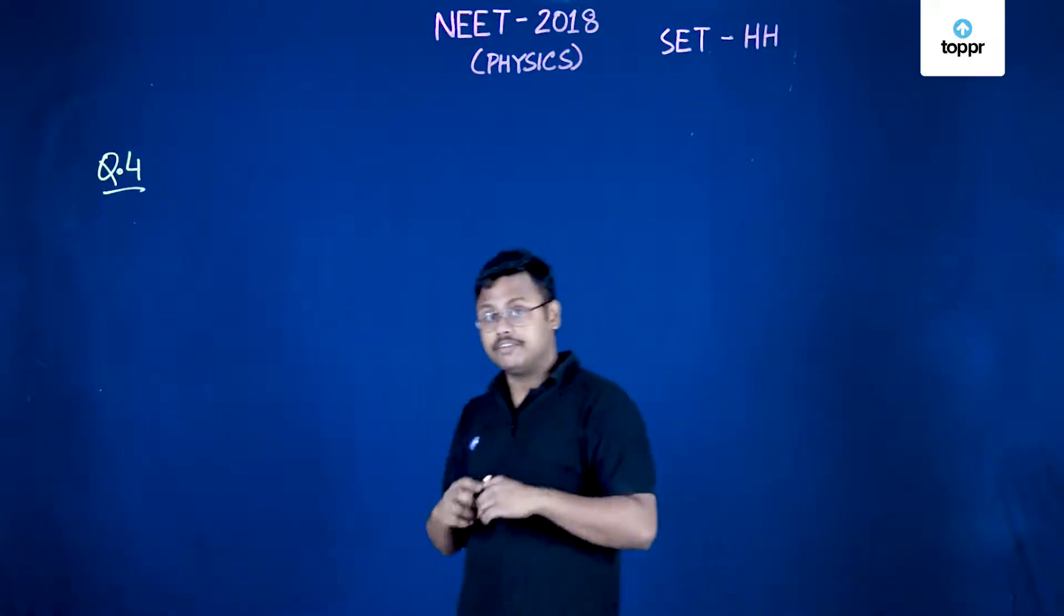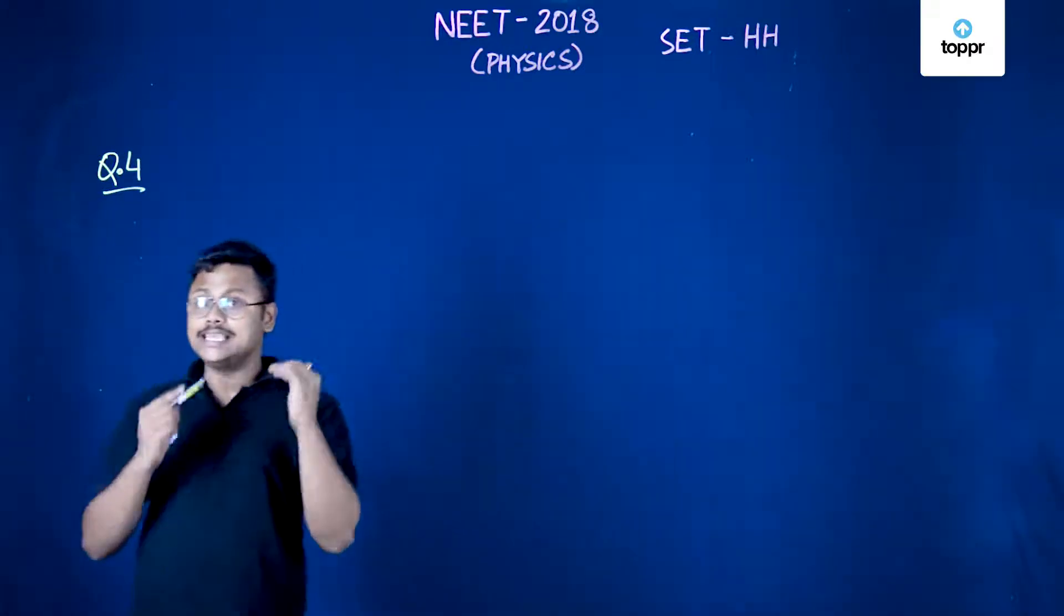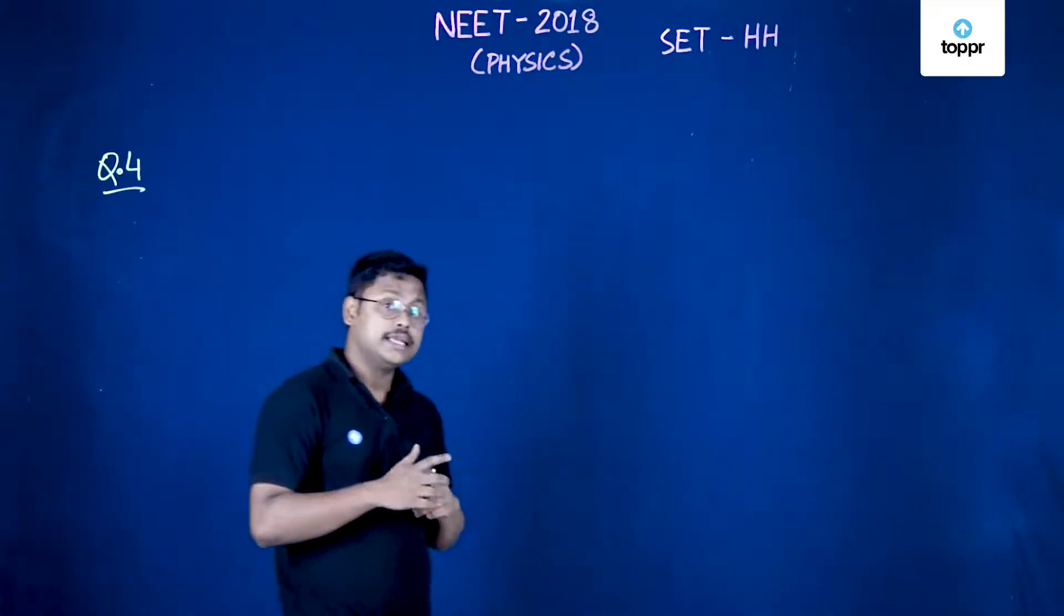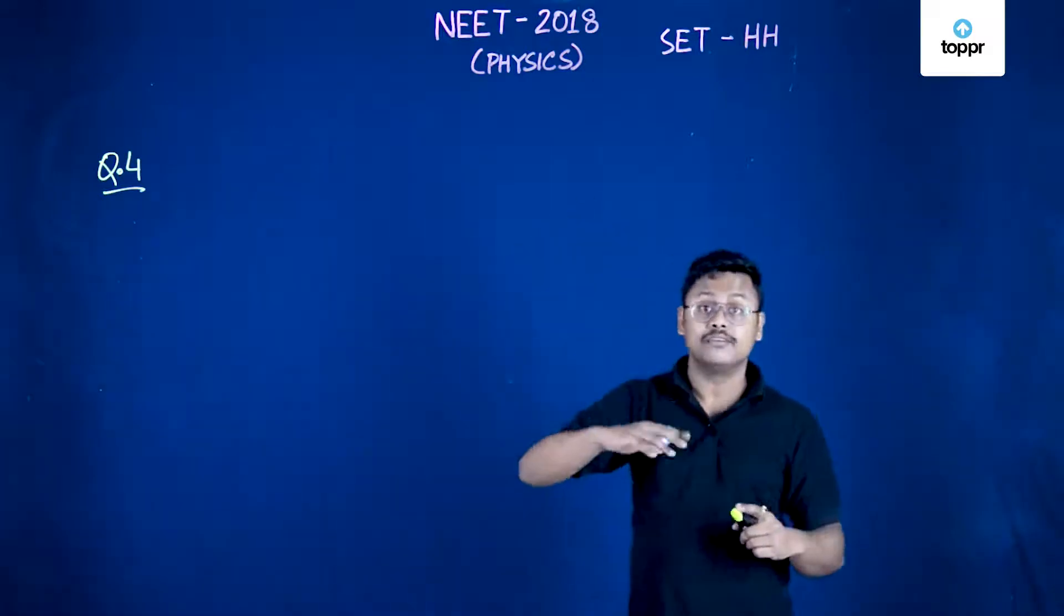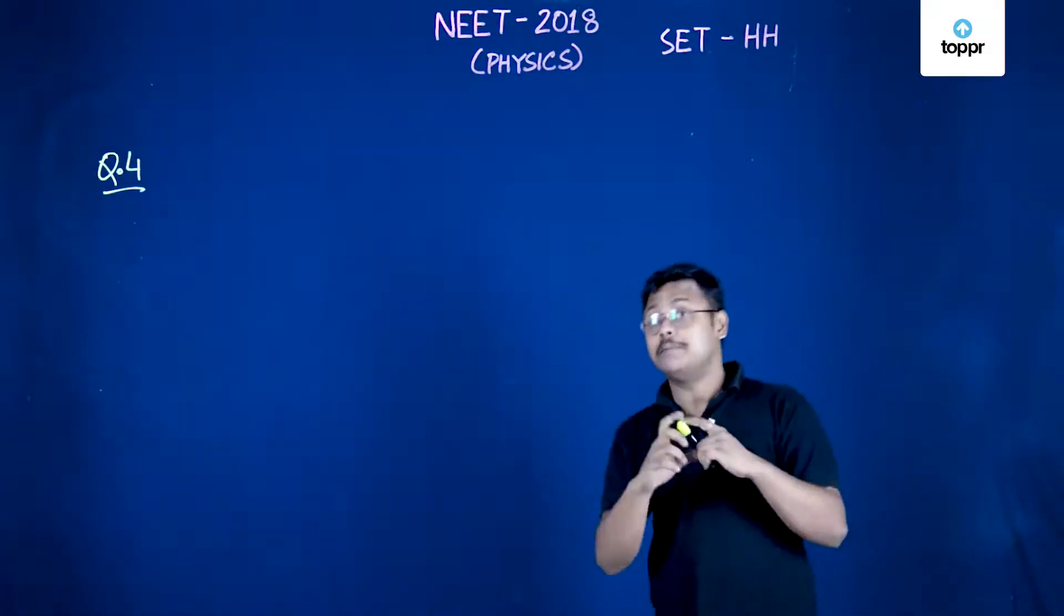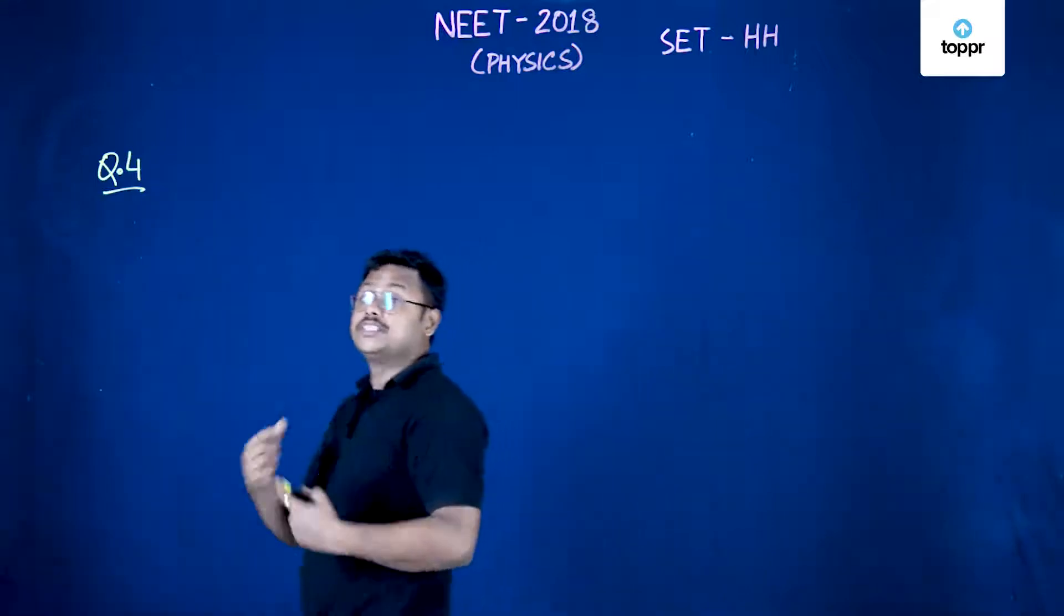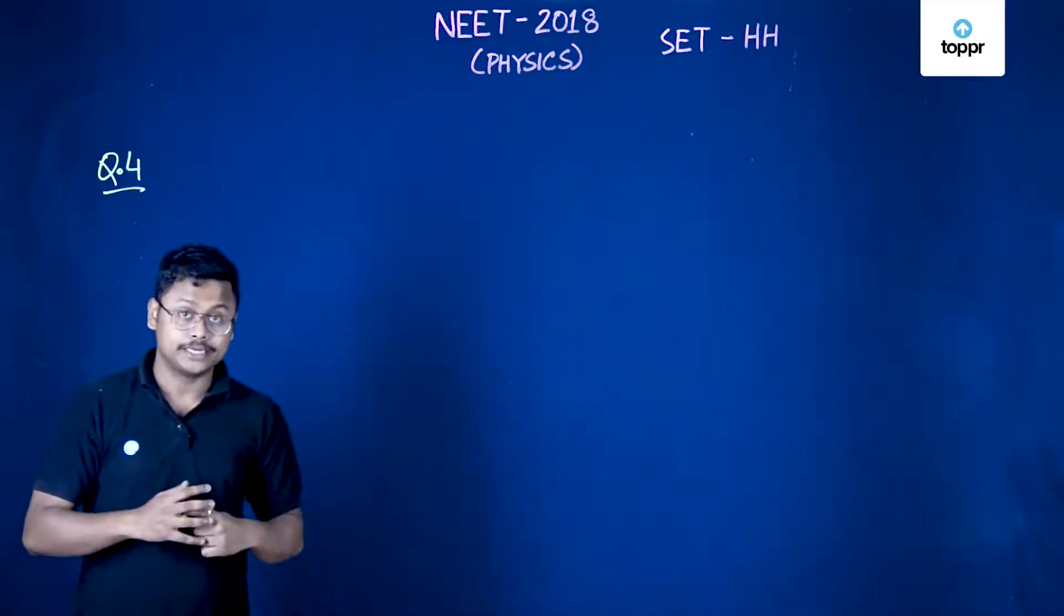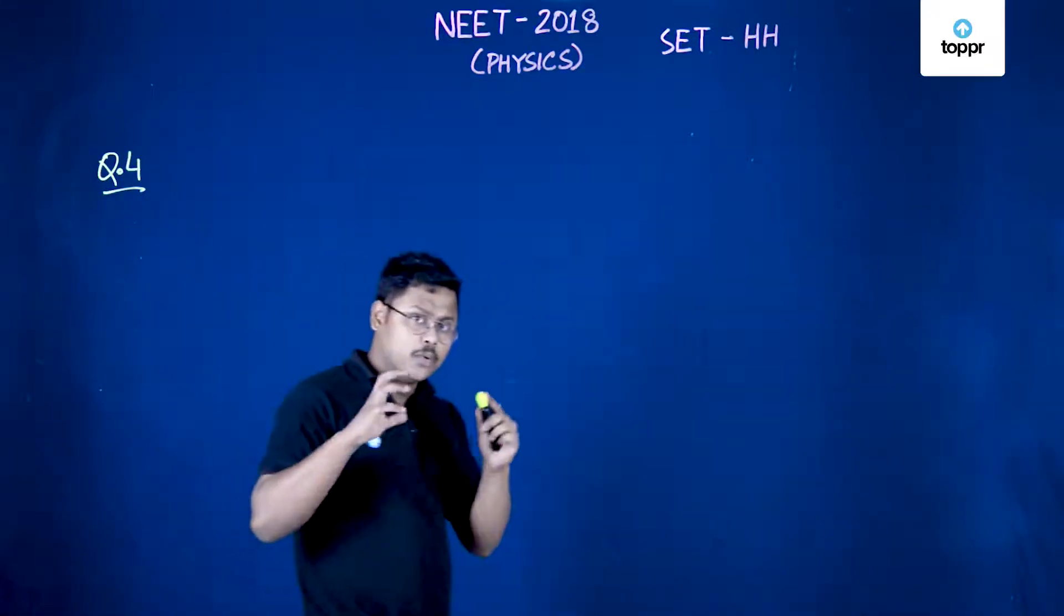The electromagnet will create a magnetic field, and we'll see the diamagnetic material is repelled away from the horizontal magnetic field and it will acquire gravitational potential energy. So the work required to do this comes from where?